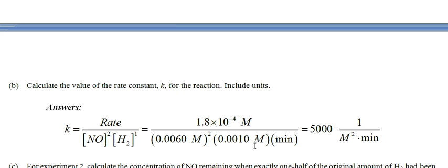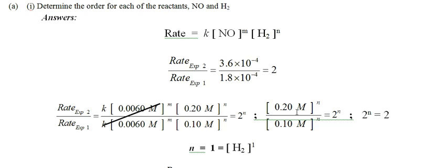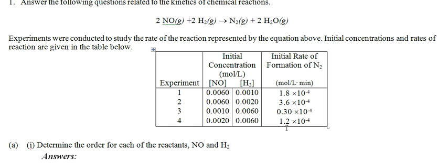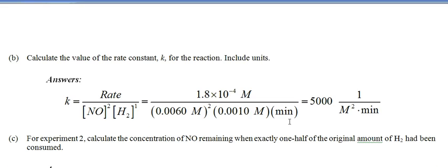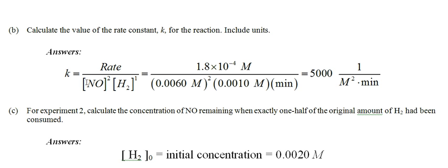Part B says: calculate the value for the rate constant K. Once you have the rate law, you pick one of the experiments — it doesn't matter which, they'll all give you the same K since K is constant throughout. It looks like I came up with K = 5000. Be aware of the units, because you'll be asked to include them. Rate is always molarity per unit of time — in this case minutes. NO is second order so we have M² on the bottom; hydrogen is first order giving M³ total on the bottom and M on top, reducing to units of 1/(M²·min). Don't freak out if the number is very big or very small — that's just how K is.